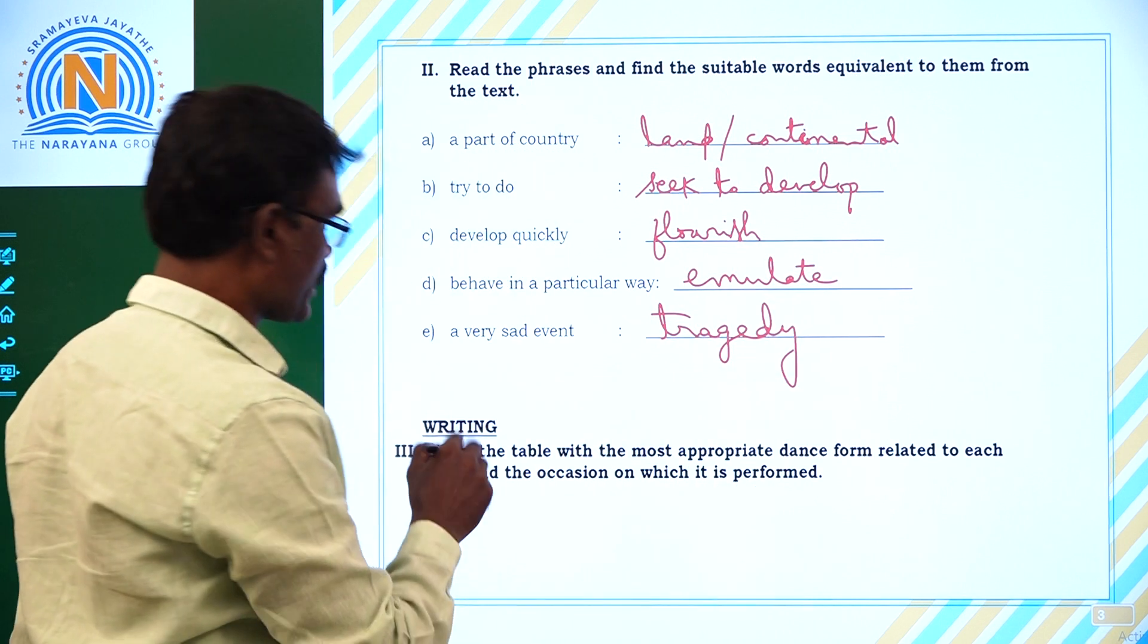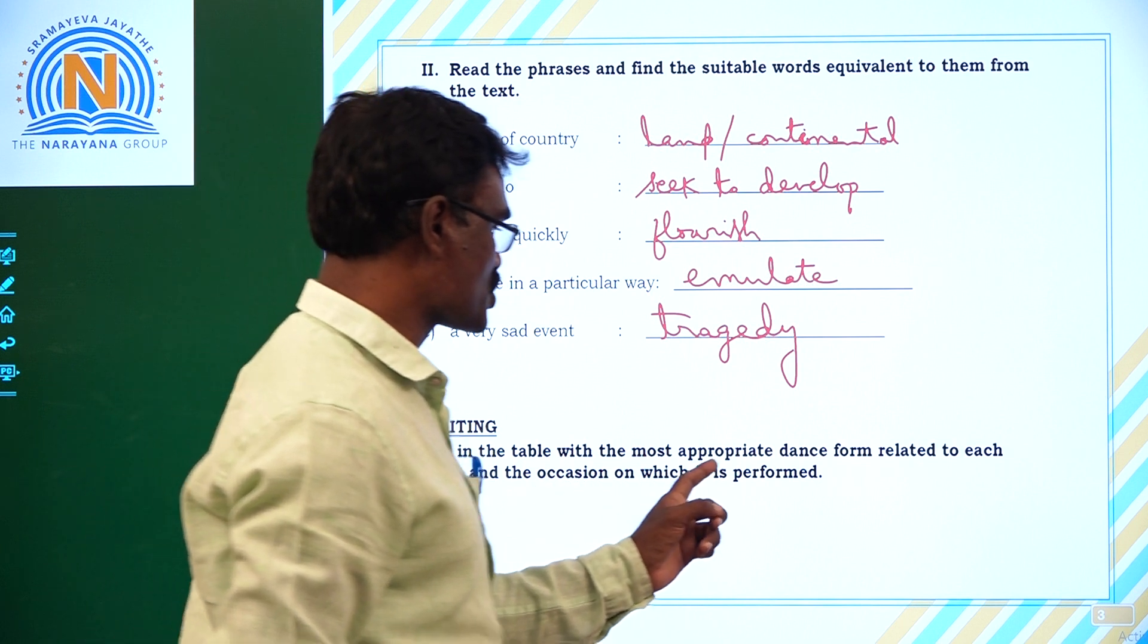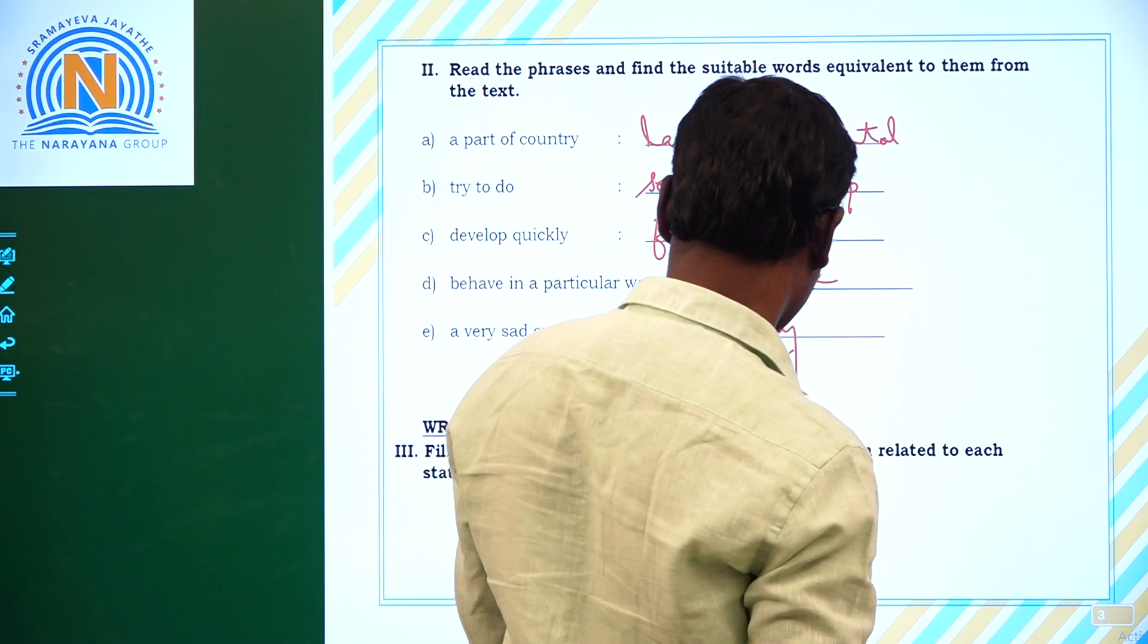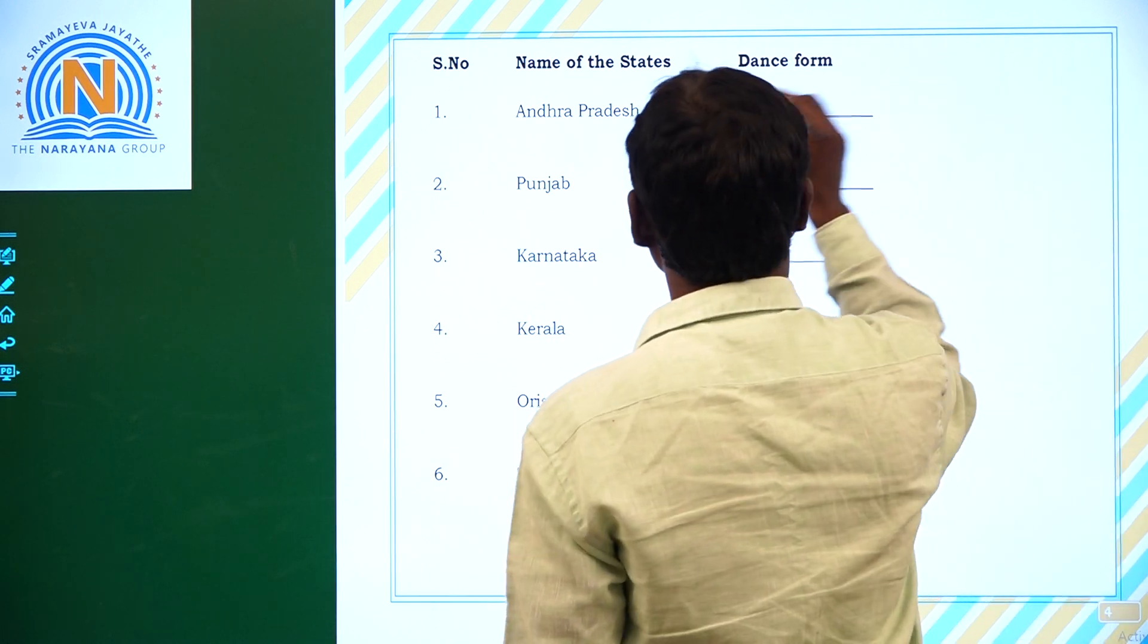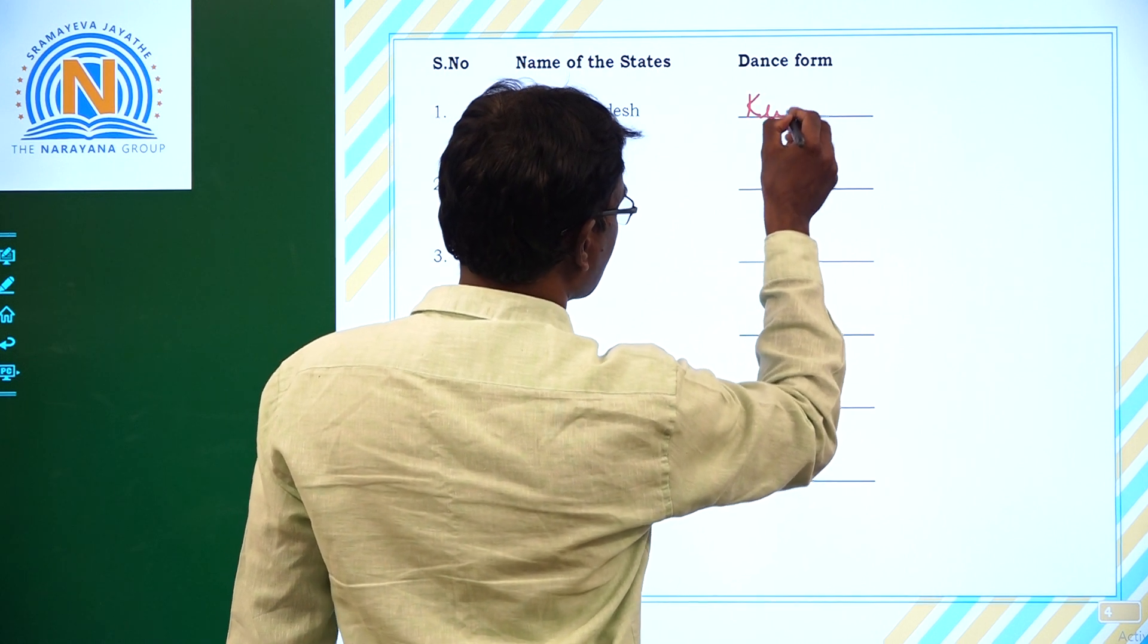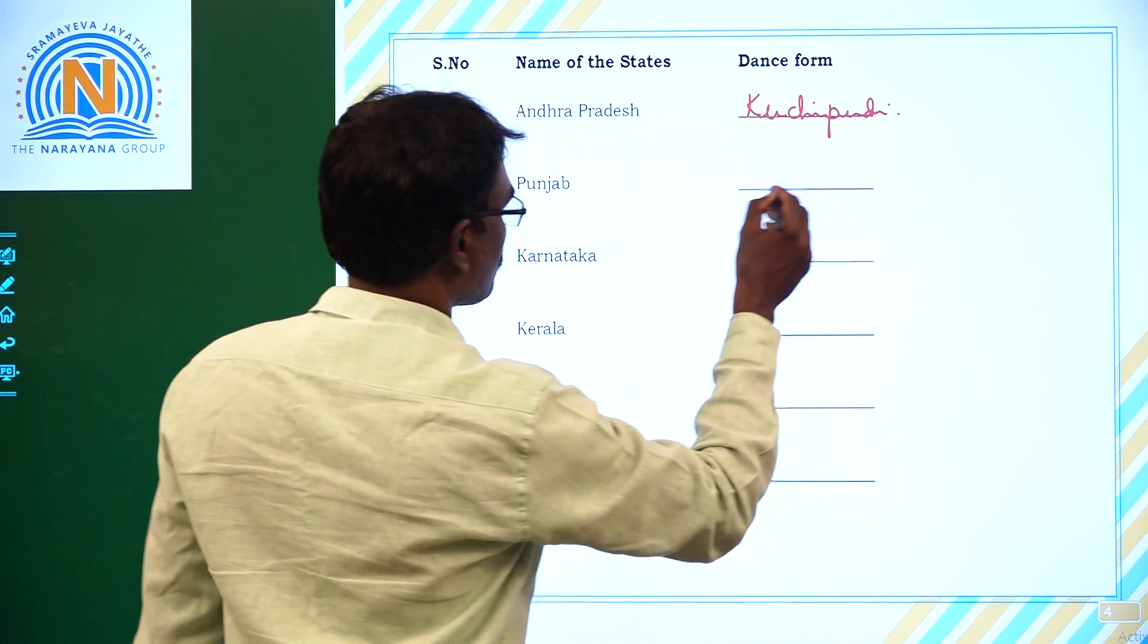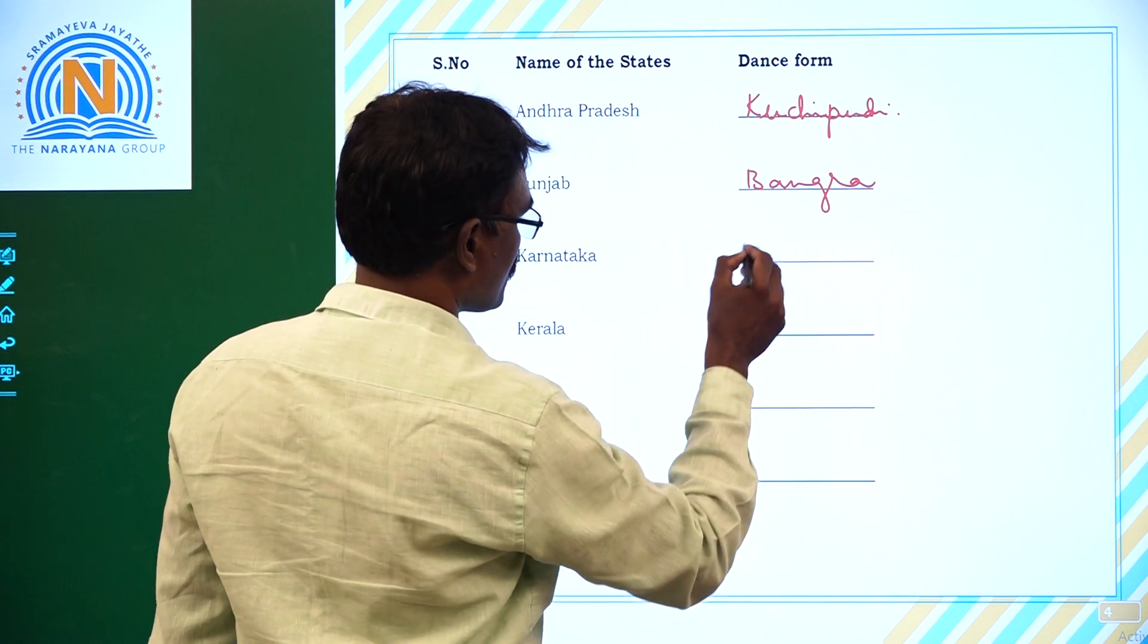Writing part, one of three. Fill in the table with the most appropriate dance form related to each state and the occasion on which it is performed. Dance form: Andhra Pradesh, the dance form of Andhra Pradesh is Kuchipudi. Punjab, Bhangra. Karnataka.